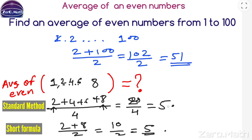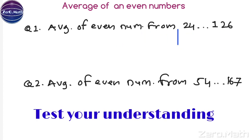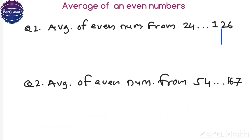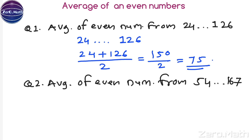Using either the short trick or the standard method we get the same result. Now let us quickly test our knowledge. Find the average of even numbers from 24 to 126. The first even number is 24 and the last even number is 126. Applying the formula: (24 + 126) / 2 = 150 / 2 = 75. That is the average of even numbers from 24 to 126.